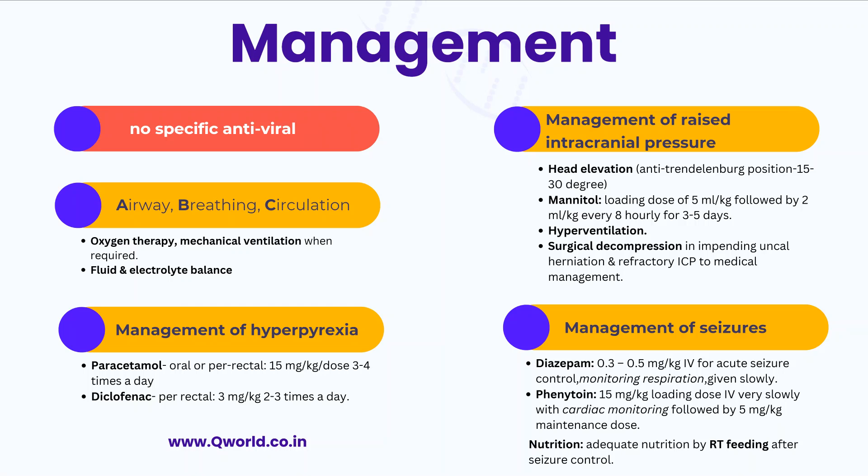Encephalitis is usually associated with raised intracranial pressure. If present, place the patient's head in an elevated position of 15 to 30 degrees, give mannitol intravenously, consider hyperventilation, and surgical decompression for impending uncal herniation or refractory intracranial pressure. Convulsions are managed with anti-epileptic drugs — diazepam for acute seizure control (given slowly IV, with respiratory monitoring), and phenytoin at a loading dose of 15 mg/kg and maintenance of 5 mg/kg IV with cardiac monitoring. Proper nutrition via ryle tube feeding is required once seizures are controlled.